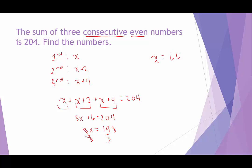So the first number is 66, meaning the three consecutive even numbers are 66, 68, and 70. You can check: adding those three numbers should give 204.